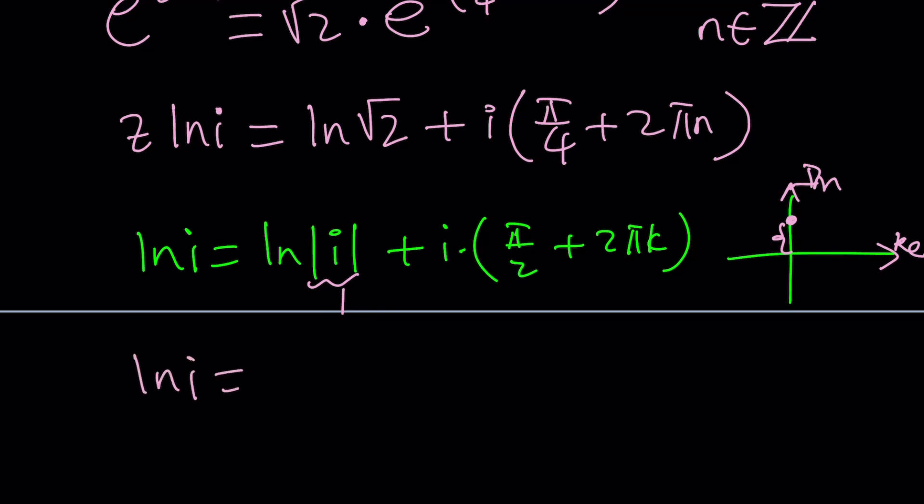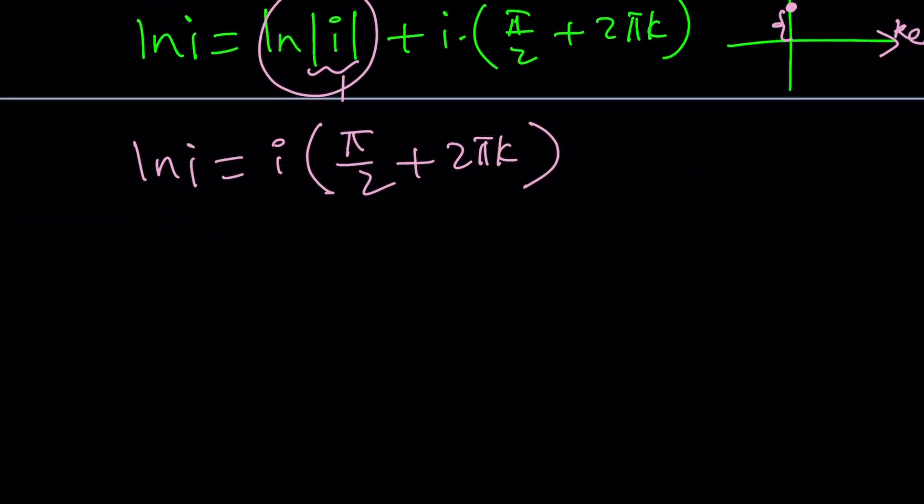So, ln i would then be i times, because this whole thing will be 0, i times pi over 2 plus 2 pi k. In other words, ln i is a multiple of pi over 2. Or, I should probably say the other way around, it's a multiple of i. Some k times i, or maybe m times i, because we used the k already.